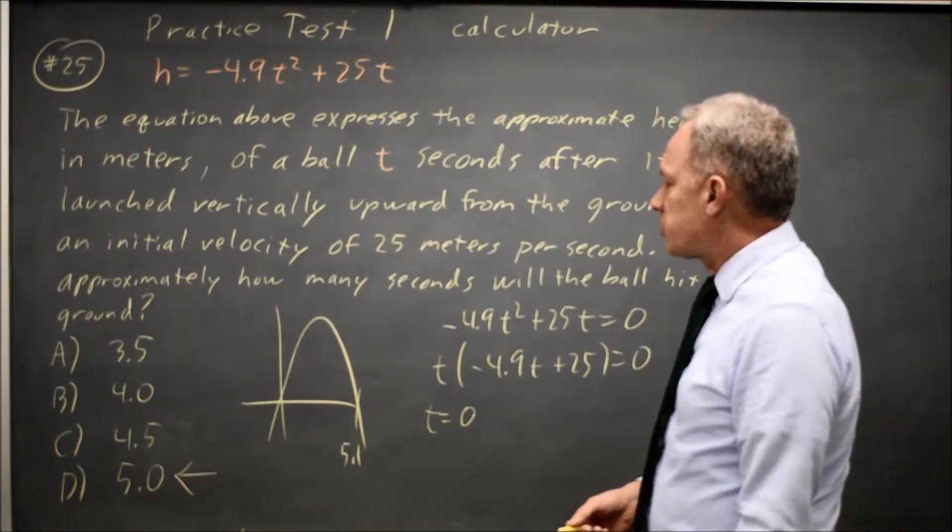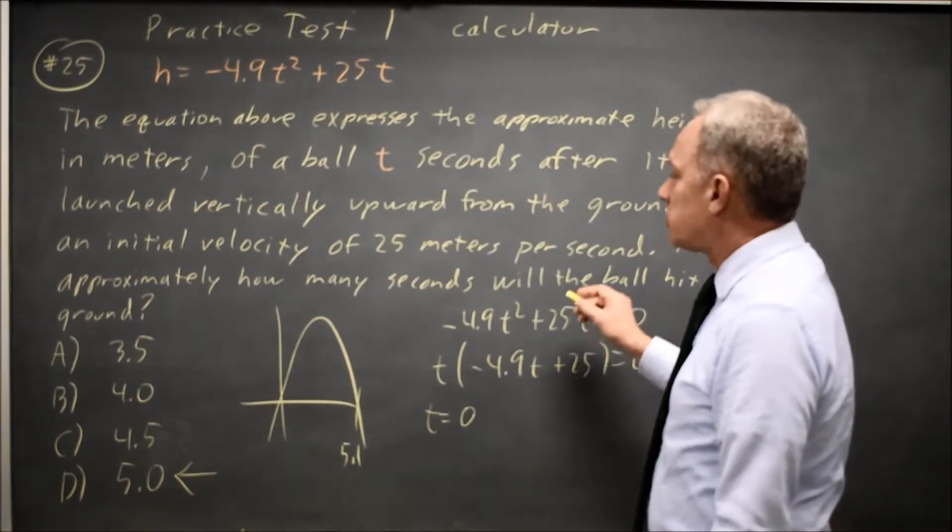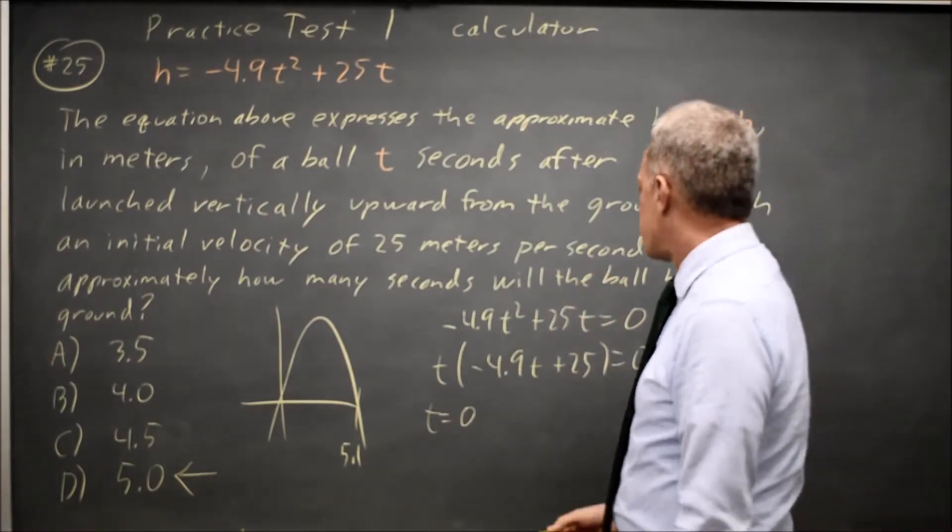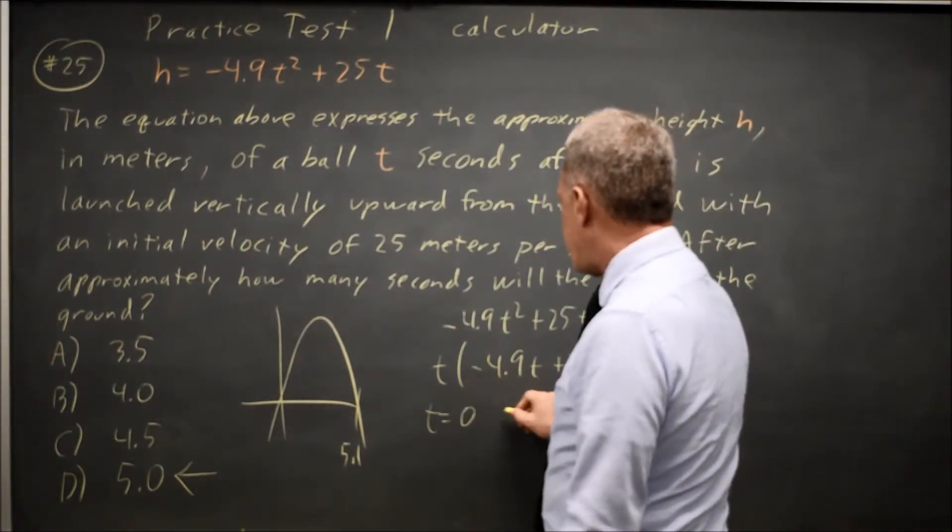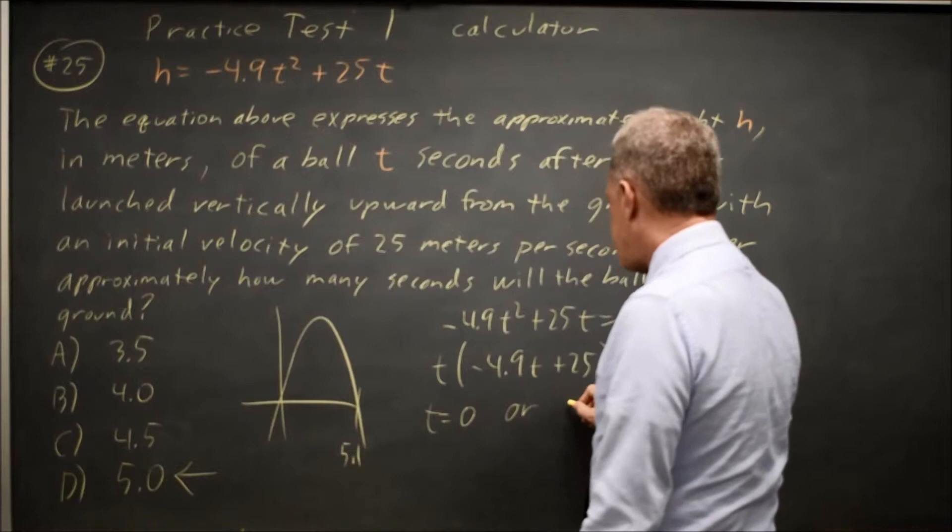It wouldn't make sense for a ball to hit the ground at the time that it's thrown upward at 25 meters per second. If the first factor is not 0, the second factor is 0,